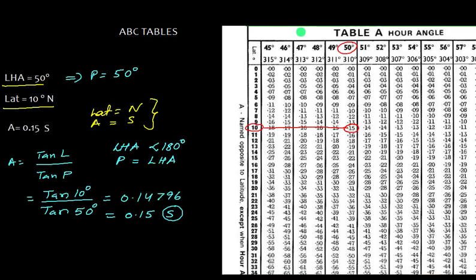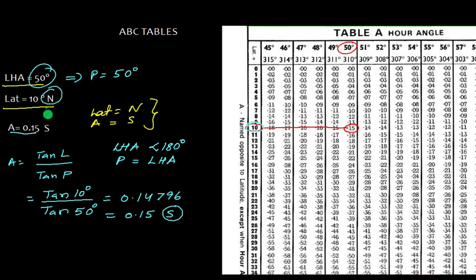Let's use the ABC table. ABC tables are provided in Norris tables. Suppose LHA is 50 degrees — so P is 50 degrees — and latitude is 10 degrees. Looking at the table at latitude 10 and LHA 50, we get the value 0.15. The naming is opposite to latitude. Since latitude is north, we name A as south.